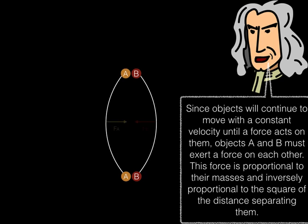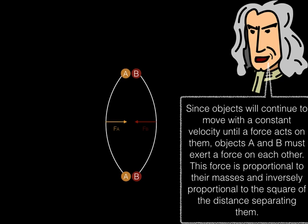How would we explain this? Well, Newton would say that since objects keep moving with a constant velocity until a force acts on them, objects A and B must exert a force on each other. What he determined is that the force they experience is proportional to their masses, the product of the masses, and inversely proportional to the square of the distance that separates them.